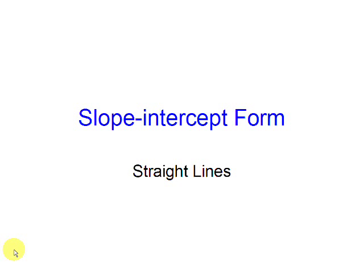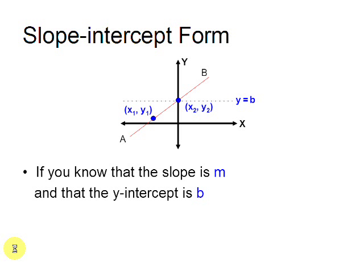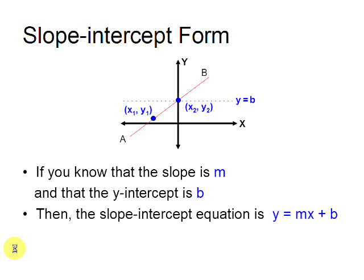I'm going to show you how to write the slope-intercept form of a straight line. If you know that the slope of a line is m and the y-intercept is b, then the slope-intercept equation is y equals mx plus b.